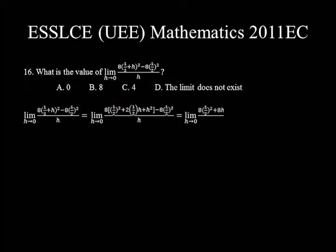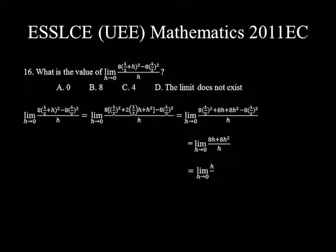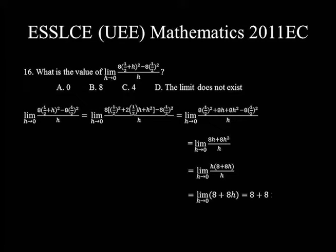We are left with (8h + 8h²)/h as h→0. Factoring out h from the numerator and cancelling with the denominator gives lim[h→0] (8 + 8h). Since the function is defined at h = 0, we substitute: 8 + 8(0) = 8. Choice B is the right answer.